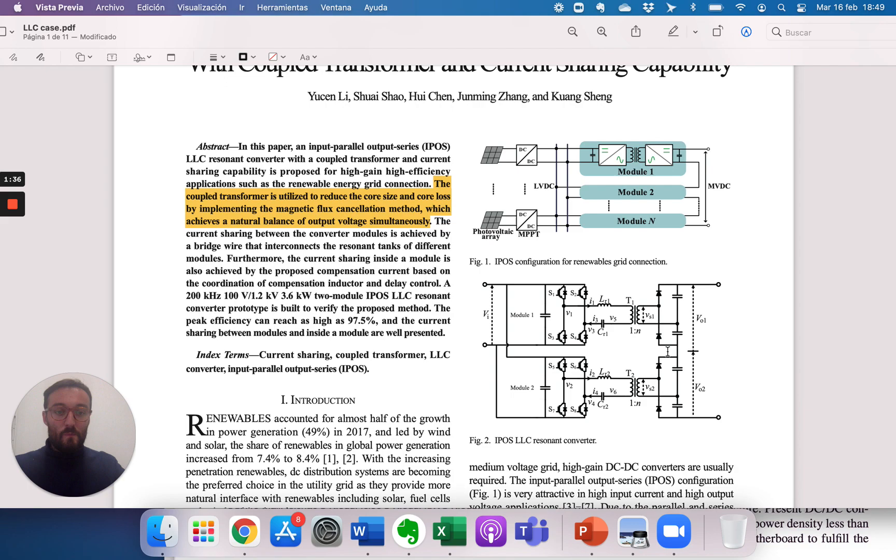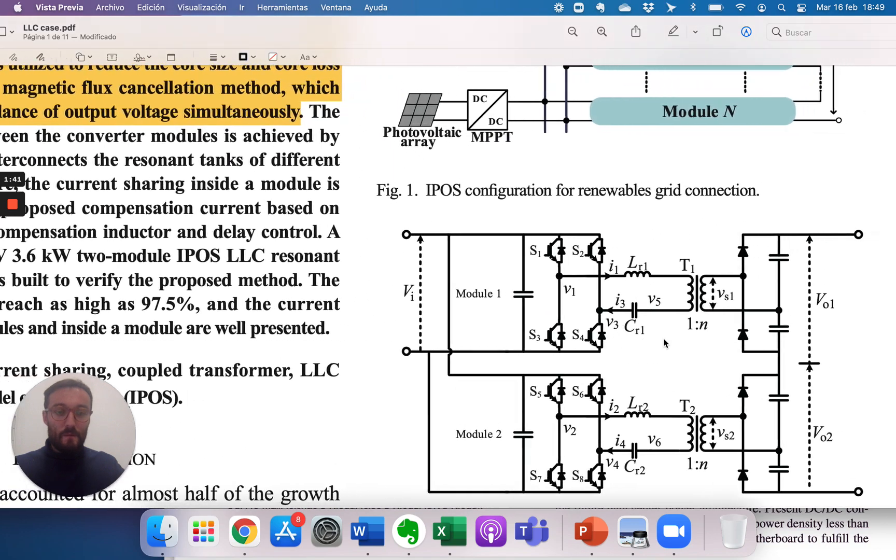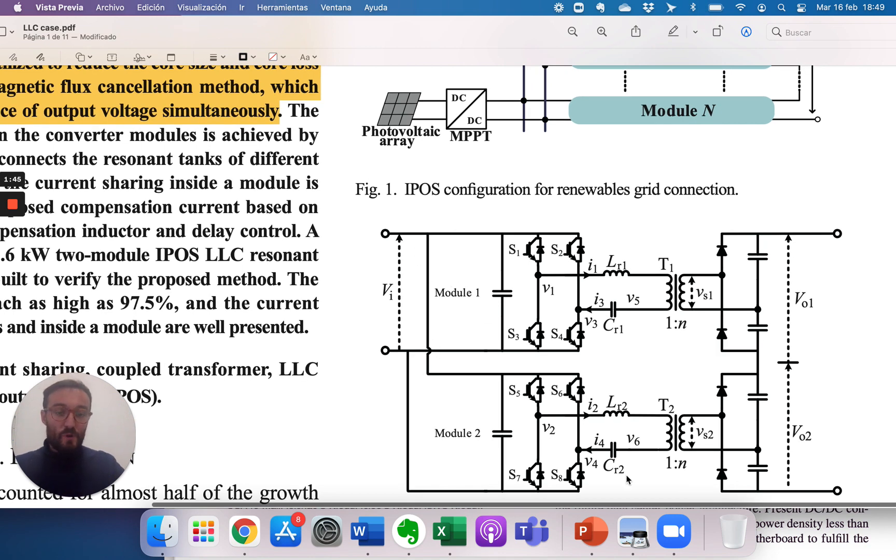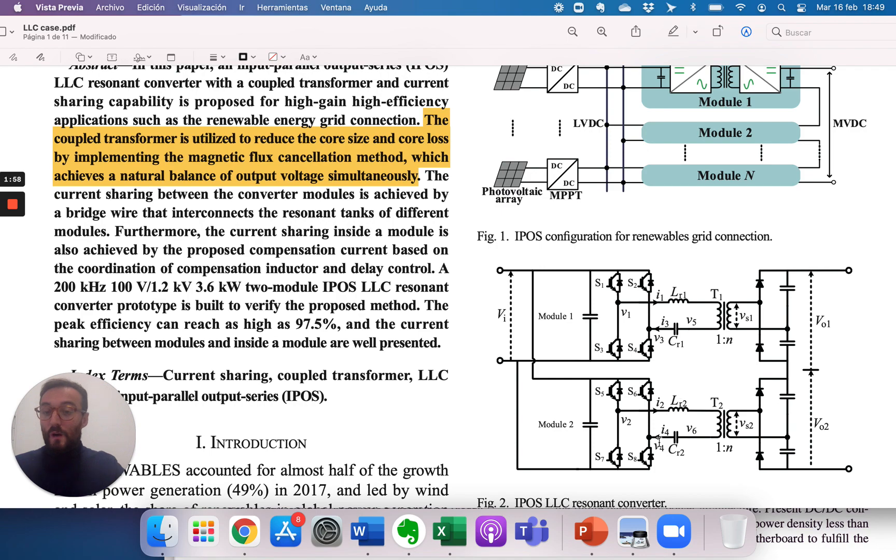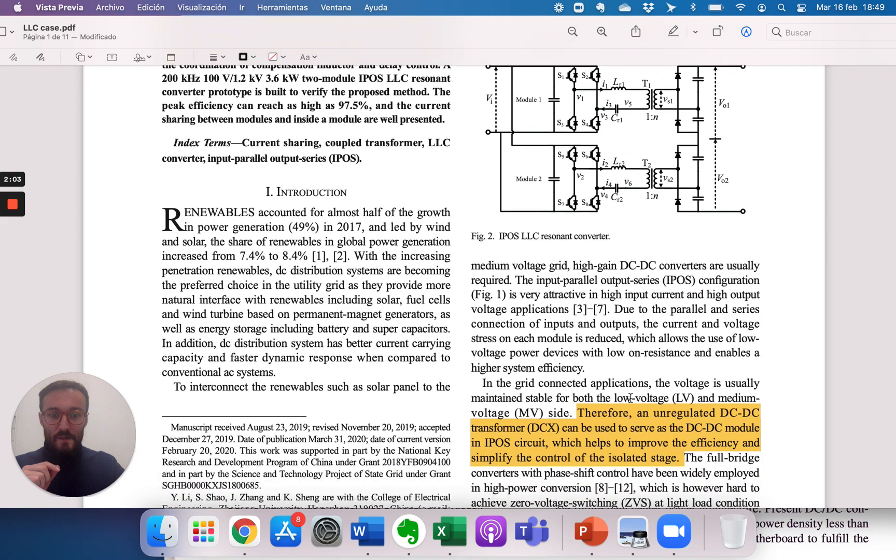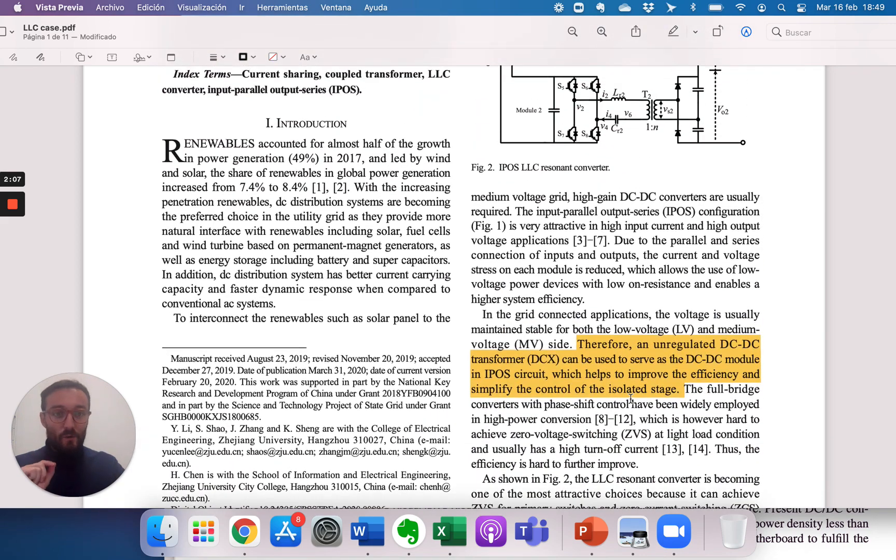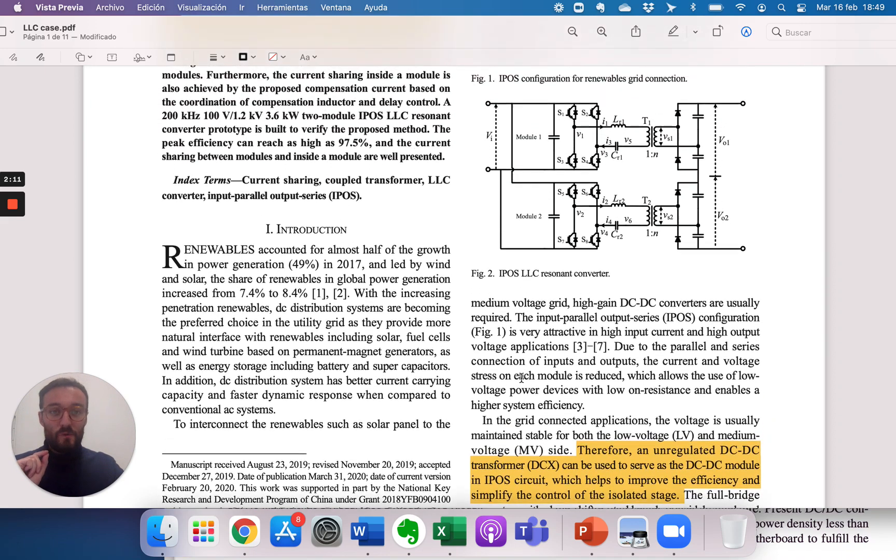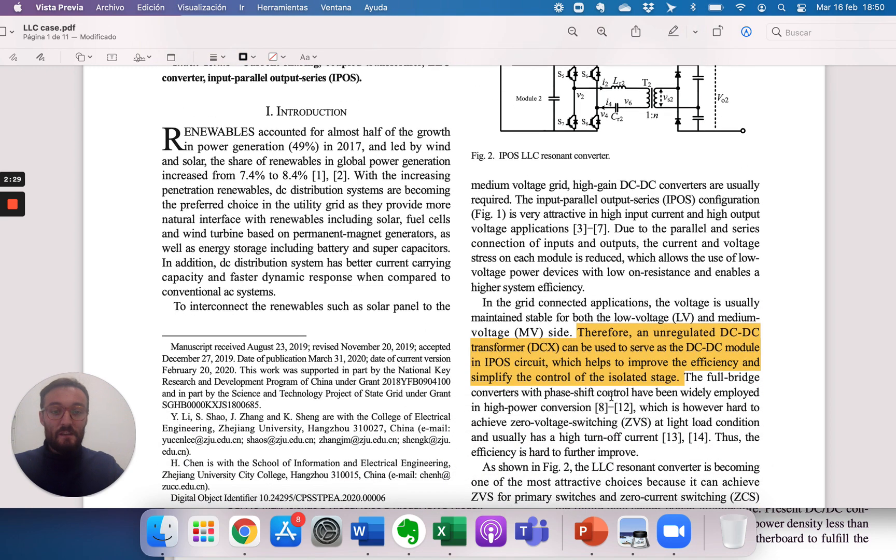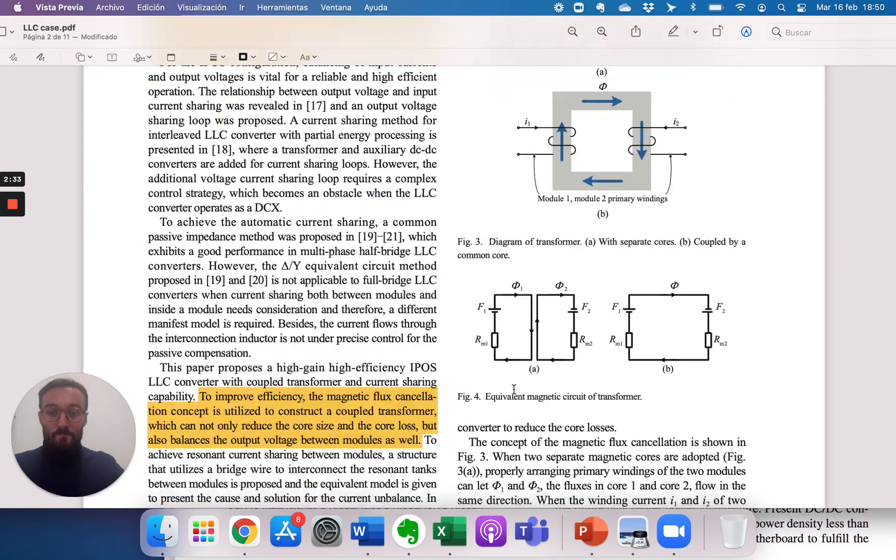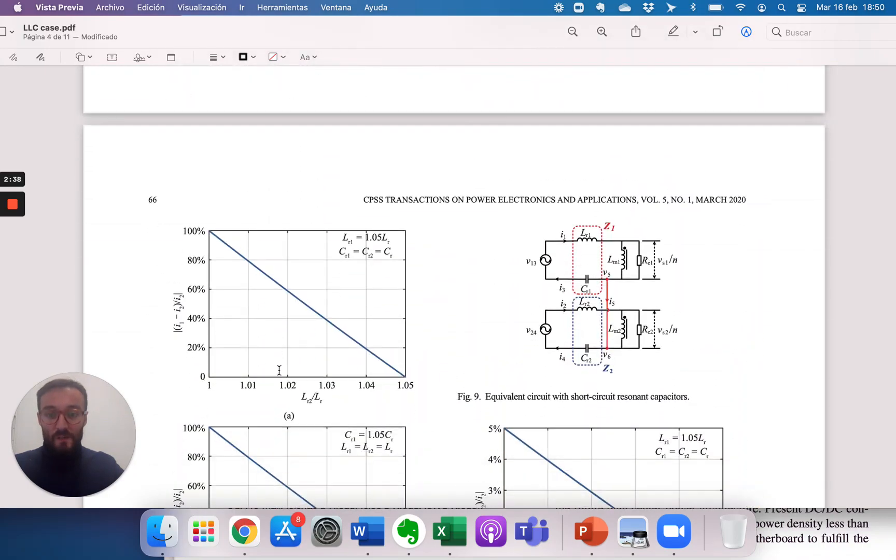Here you can see that they proposed to work in a parallel input. They have this resonant two bridge in parallel and the output in series. The first problem they find is the current sharing between the two parallel inputs, and this is something that they comment during the article. They focus on this topology highlighting that it is very useful when you are in non-regulated systems when you have the input and output voltage more or less fixed and you don't have to have regulation at the end. They focus on non-regulated systems.